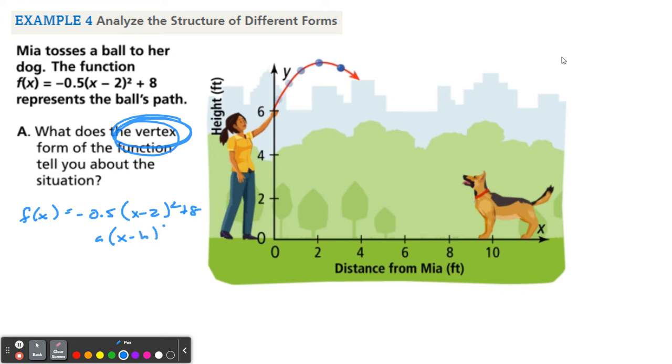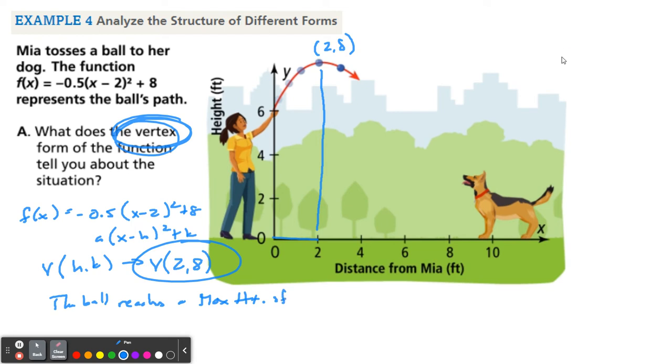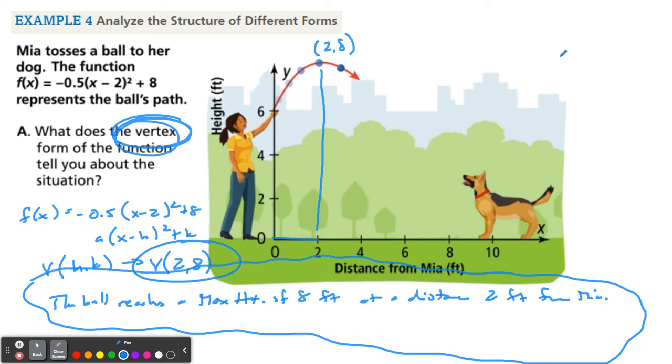Remember that your vertex is the h and the k. So in this case, my vertex is positive 2. Remember, you just take the, if it's a negative, you take out the positive number, and then your k is an 8. So this is what it tells you. It tells you that after 2 feet from Mia, so when Mia throws it, after 2 feet, which is here, the ball is at a maximum height of 8 feet. That is your vertex. So we're going to write a little sentence. So the ball reaches a max height of 8 feet at a distance 2 feet from Mia. There you go. That's what vertex form tells us. Right away, it tells us the vertex. Boom. In your face.